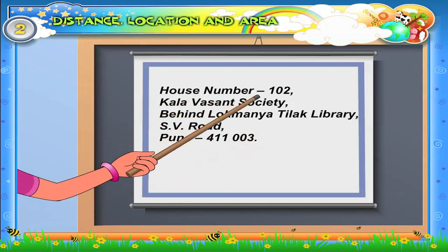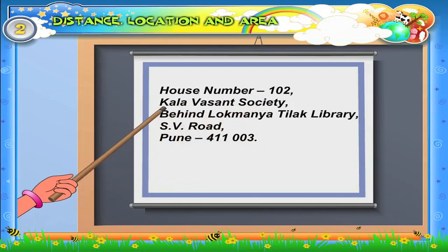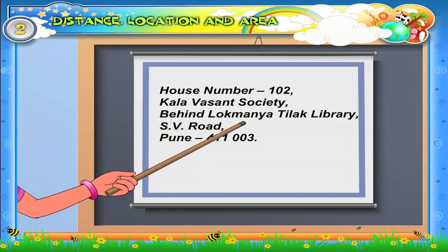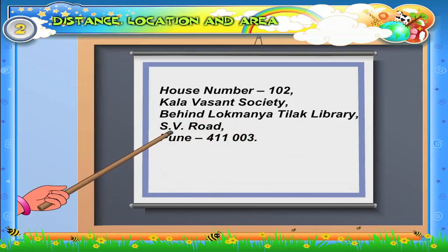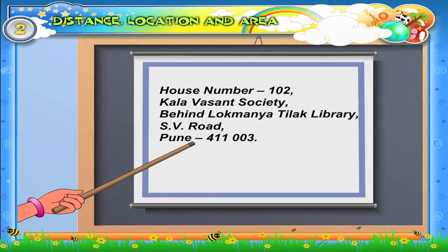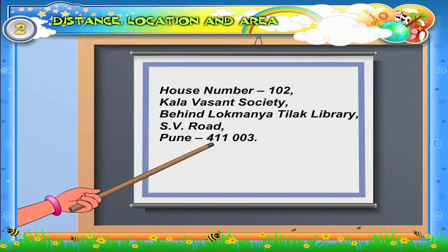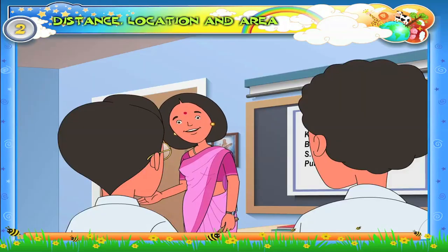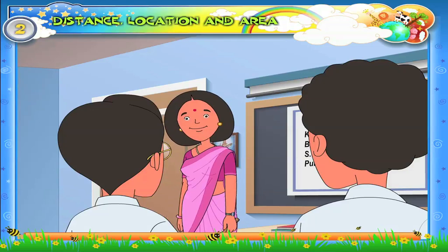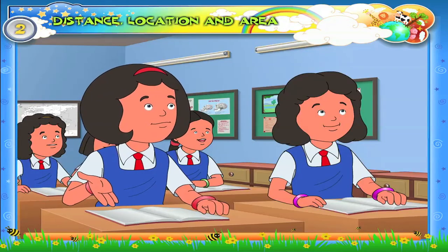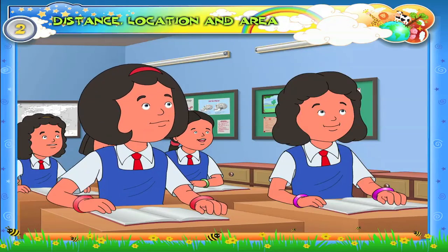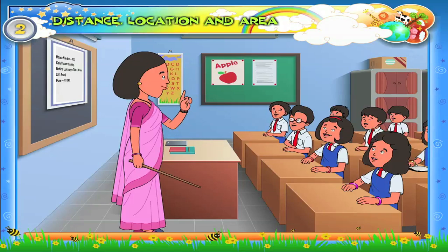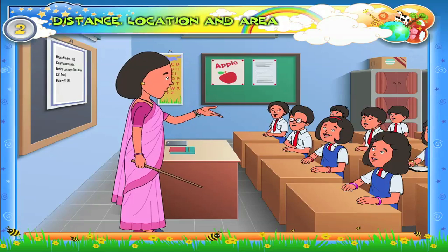The entire description can be written as: House number 102, Kala Vasanth Society, behind Lokmanya Tilak Library, SV Road, Pune — 411 003. This is Arun's address. An address gives us details of the location where a person lives and how to reach his house.